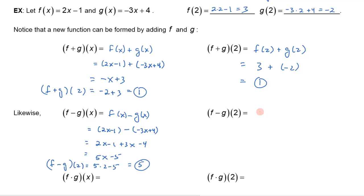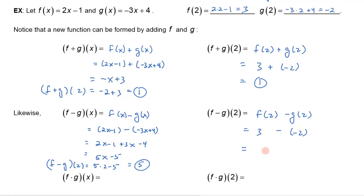Or I could do f(2) minus g(2) separately. Plugging 2 into f gives me 3, and plugging 2 into g gives me negative 2. If I subtract those, I get 5 — the same thing, as we'd expect.